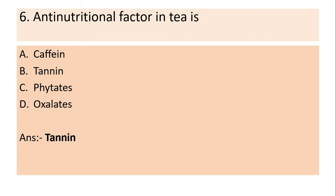The anti-nutritional factor in tea is — caffeine, tannin, phytates, or oxalates. Answer: Tannin.